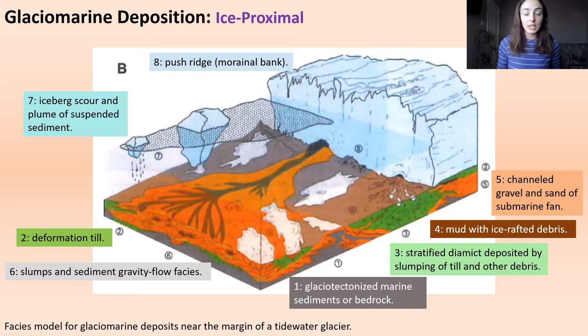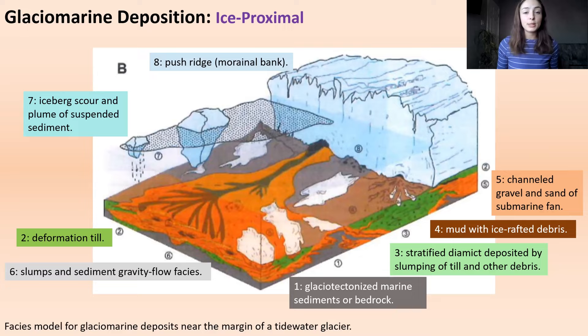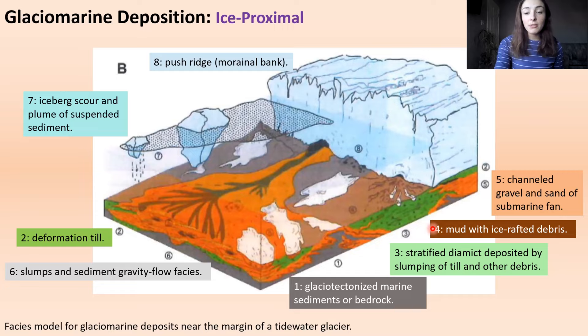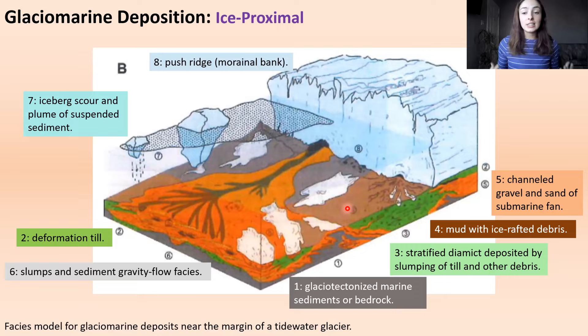Number three is stratified diamict deposited by slumping of till and other debris. Number four is mud with ice-rafted debris on the basin floor — just like in glacial lacustrine systems, icebergs transport sediment and drop it into a fine muddy matrix. This is called ice-rafted debris, rainout debris, or diamict. Number five is channeled gravel and sand of a submarine fan — an older previous deposit — while a current submarine fan is forming due to glacial meltwater.